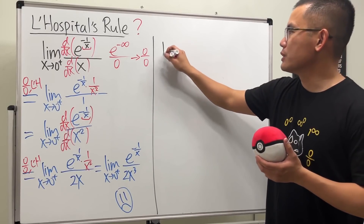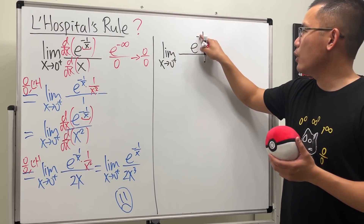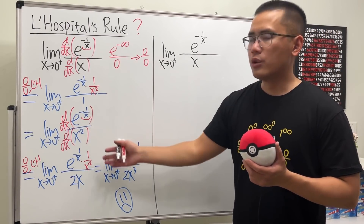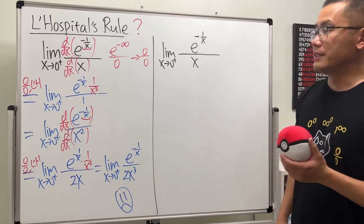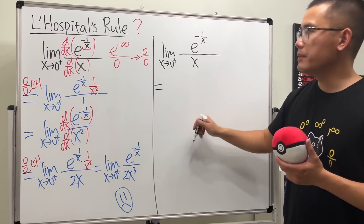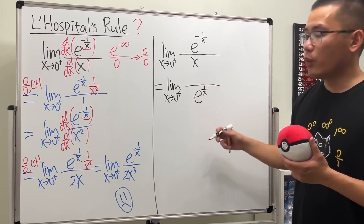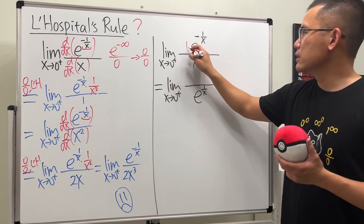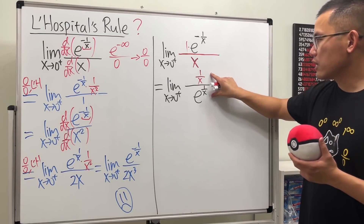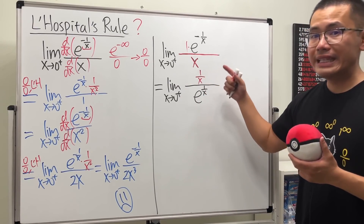We will still use L'Hôpital's rule, but differently. Here's the limit as x approaching 0 plus of e to the negative 1 over x over x. This is a classic example where you should not just apply L'Hôpital's rule without being careful — you have to have a sense of danger. Because we have a negative exponent, we can bring it down to the bottom. So this becomes the limit as x approaching 0 plus of 1 over x on top, over e to the 1 over x on the bottom. When we put 0 plus in, we get infinity over infinity.